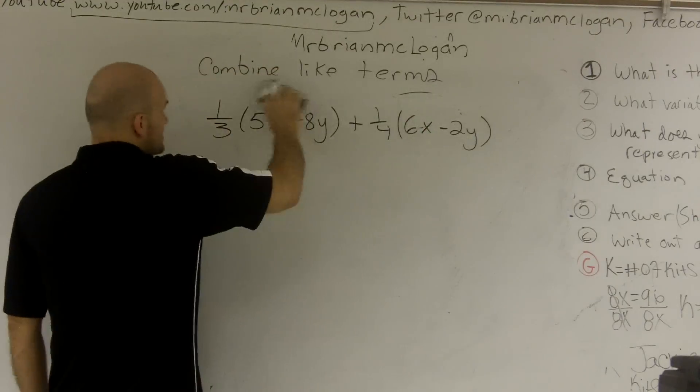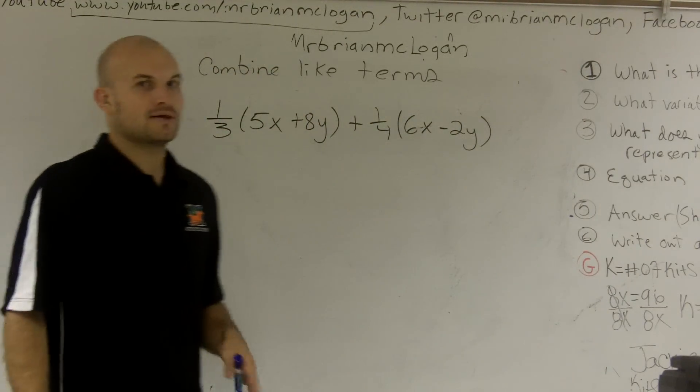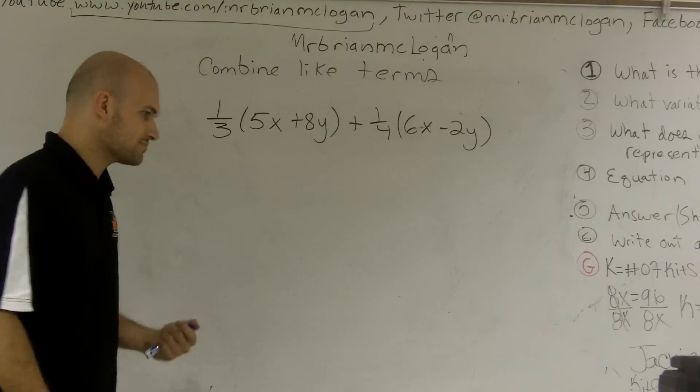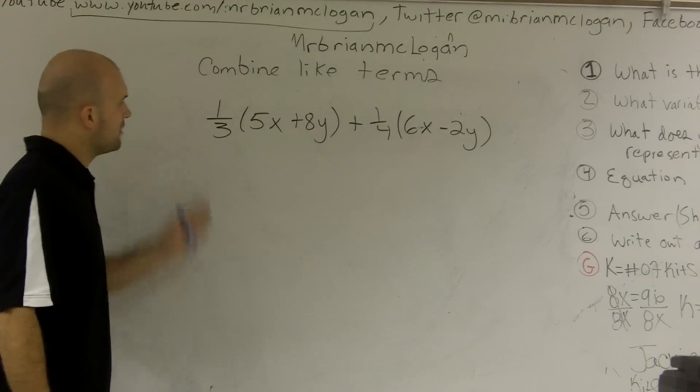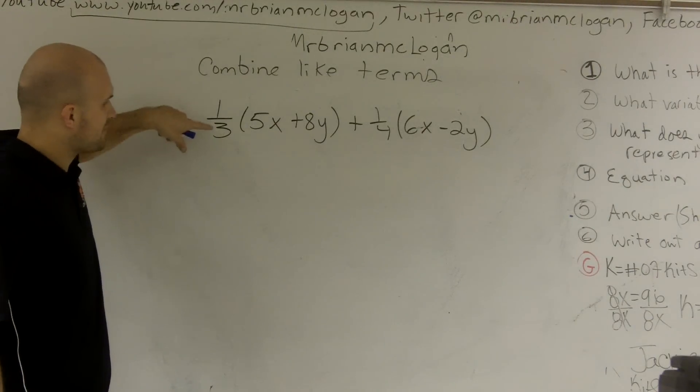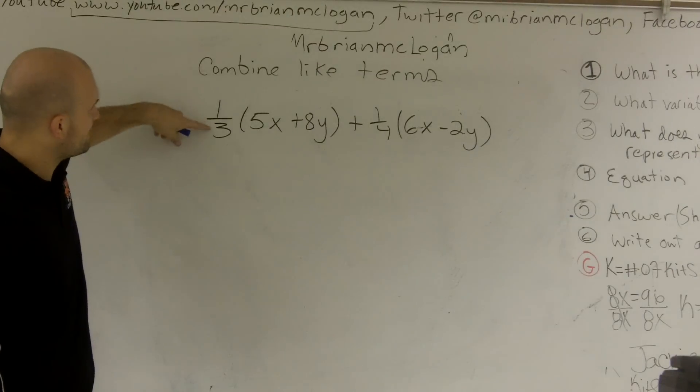When I see fractions, rather than multiply by my fraction, I want to get rid of my fraction. To get rid of my fraction, I can multiply by multiples of our denominator. If I'm dividing by 3, to undo that, I can multiply by 3.